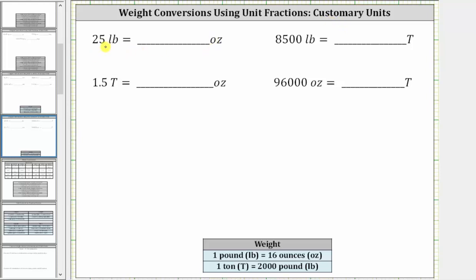The first thing we do is write 25 pounds as a fraction with a denominator of one. Now we will multiply by a unit fraction to perform the conversion. Looking at the conversions below, notice that one pound is equal to 16 ounces. We use this conversion to form the unit fraction. Because we have pounds in the numerator and we want pounds to simplify out, in the unit fraction, pounds must be in the denominator and ounces in the numerator.